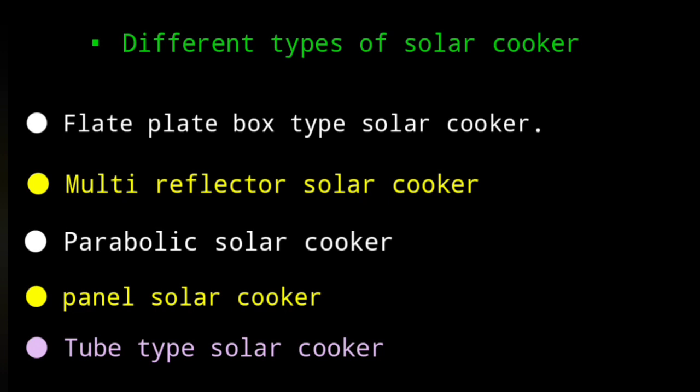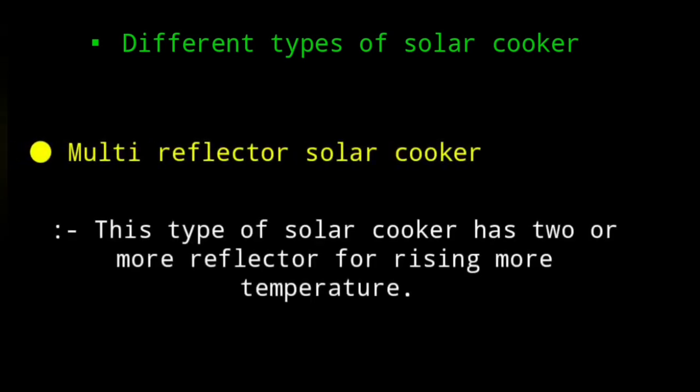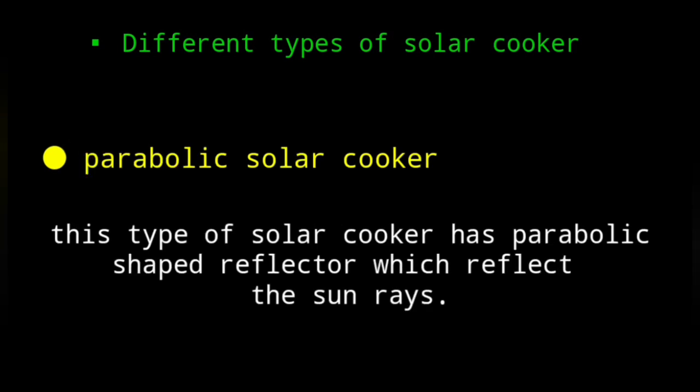Different types of solar cookers exist, but the working principle is the same. To modify it further, a multi-reflector solar cooker is used. This type of solar cooker has two or more reflectors attached, which further increases the temperature of the cooking zone.